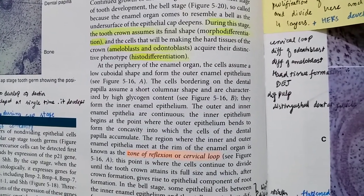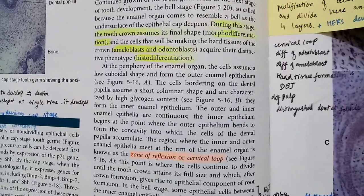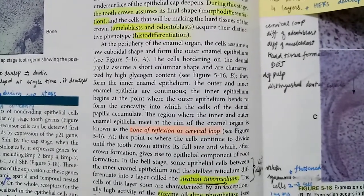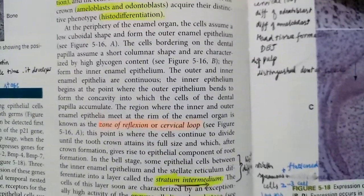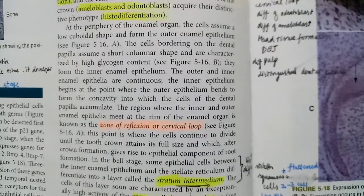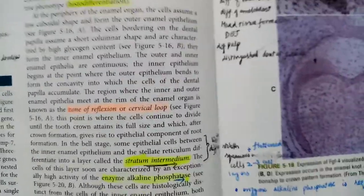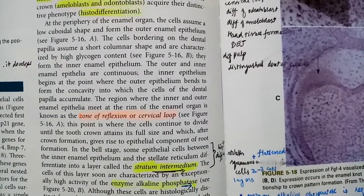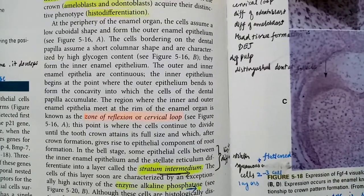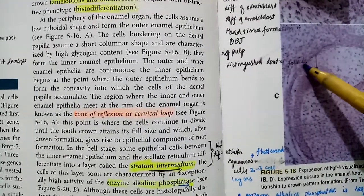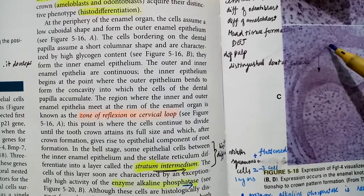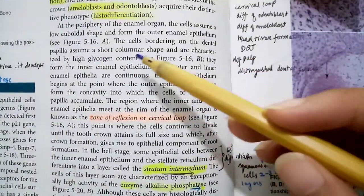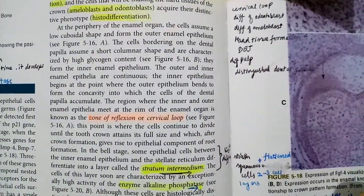At the periphery of the enamel organ, the cells assume a low cuboidal shape and form the outer enamel epithelium. We talk about the periphery of the enamel organ. This part of the enamel organ, here the cells will adopt a low cuboidal shape and form the outer enamel epithelium. This would be the outer enamel epithelium and they will be low cuboidal cells. The cells bordering on the dental papilla assume a short columnar shape and are characterized by high glycogen content.